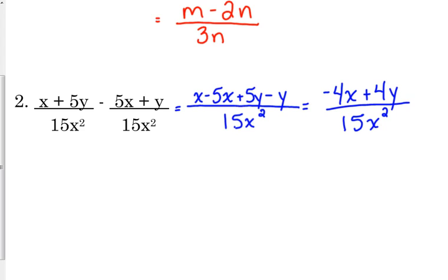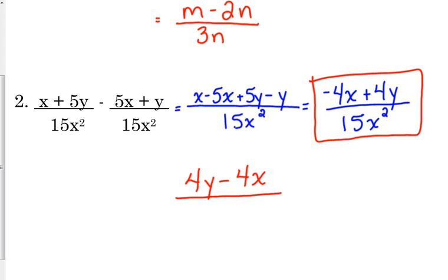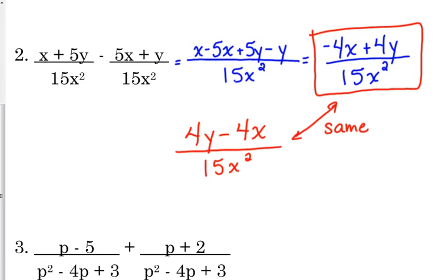Now that numerator can be factored as well, but it doesn't do us any good because 4 over 15 is not going to reduce. So I'm just going to leave it in that form right there. Now you may see it written so that the leading term is not negative. They may reverse the order, they may put the 4y minus 4x just so that it doesn't lead with a negative. But those are equivalent. I'm good with either one, they're the same. You have to write one less sign if you write it the second way.